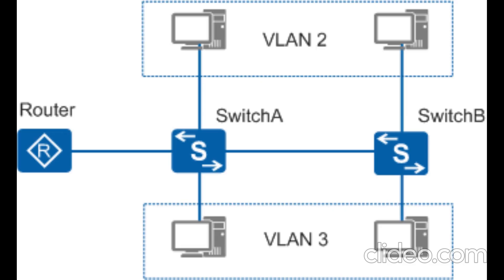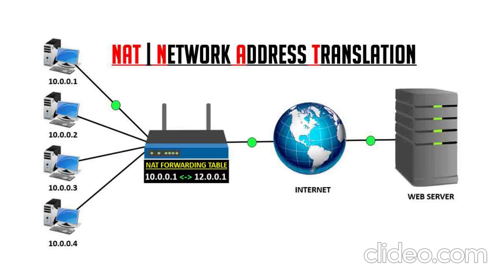Fourth is virtual local area network, or VLAN. It unites network nodes locally into the same broadcast domain regardless of their physical attachment to the network. Fifth is network address translation, or NAT, which acts as a liaison between an internal network and the internet.